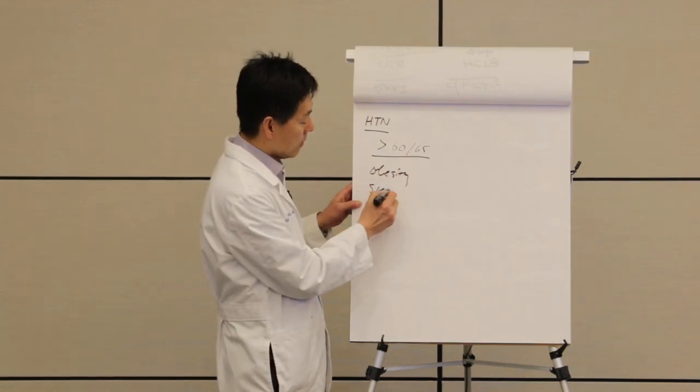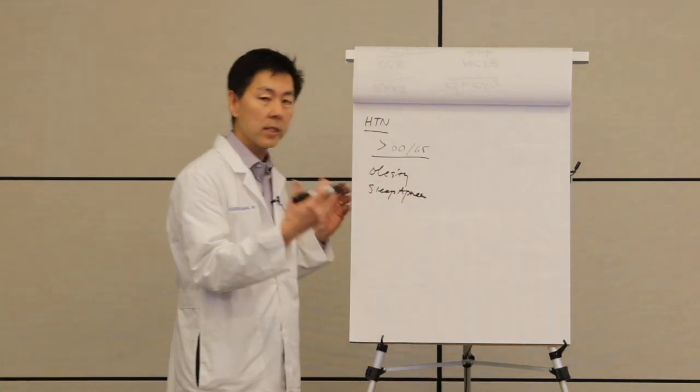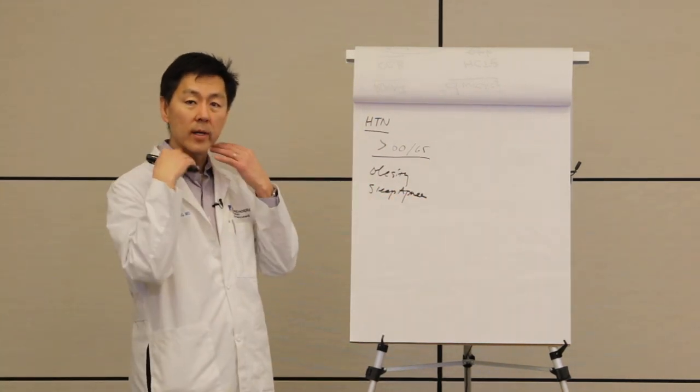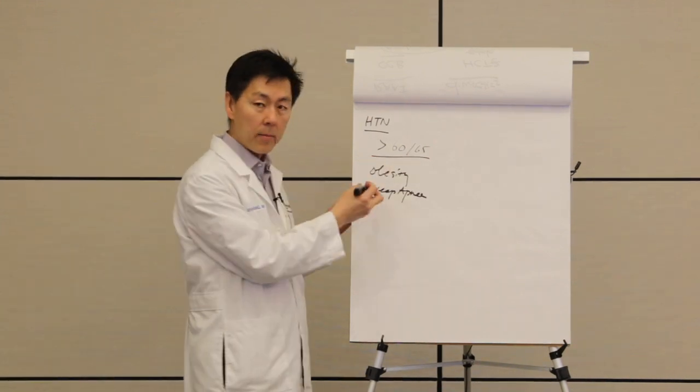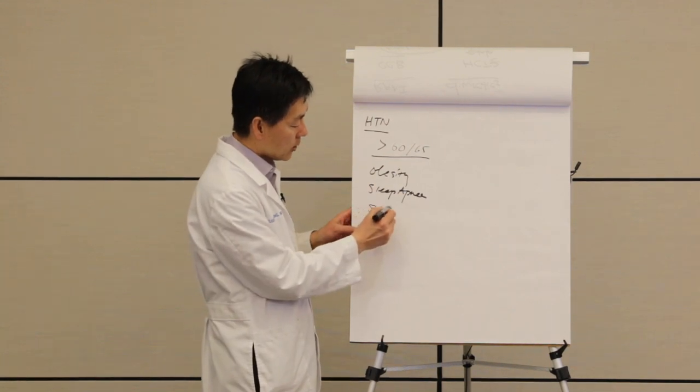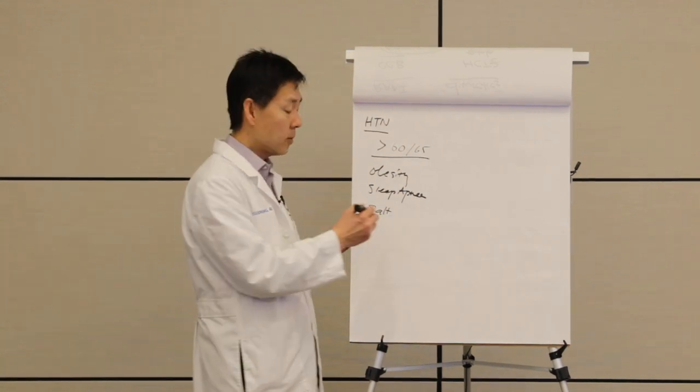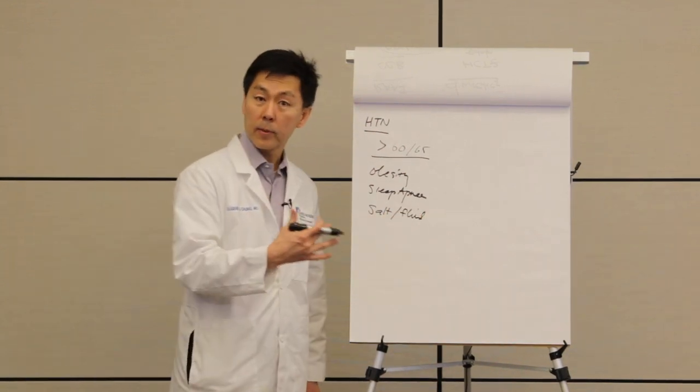Sleep apnea. If you don't sleep well, meaning you have obstruction of the airway from your tongue that falls back while you sleep, that can make your heart work harder and make your blood pressure go up. Too much salt intake and too much fluid that goes with that leads to high blood pressure.